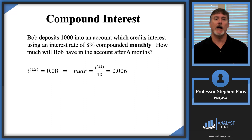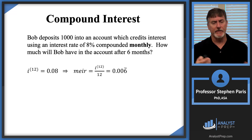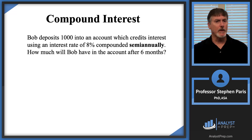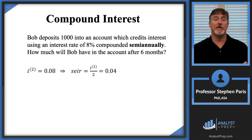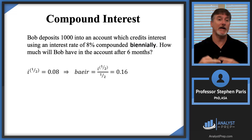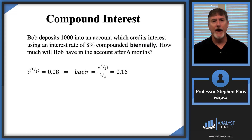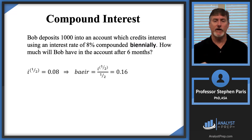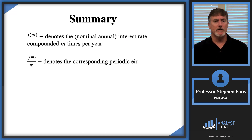For i^(12) = 0.08, we divide by 12 to get the monthly effective interest rate: 0.08/12 ≈ 0.00667 (repeating). For semi-annual compounding, i^(2) = 0.08, and the semi-annual effective rate is 0.08/2 = 0.04. A tricky one: 'biannually' means once every two years (not twice a year — that's semi-annually), so i^(1/2) = 0.08, and dividing 0.08 by 1/2 gives a biannual effective rate of 0.16.